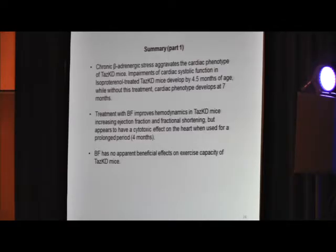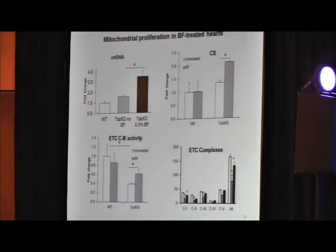So far, what we found: chronic beta-adrenergic stress aggravates cardiac phenotype in tafazine knockout mice. Impairments in cardiac systolic function in iso-treated tafazine knockout mice developed much earlier, at 4.5 months of age, while without this treatment, cardiac phenotype, dilated cardiomyopathy or systolic dysfunction, becomes apparent at seven months of age. Bezafibrate improves hemodynamics of tafazine knockout mice, increasing ejection fraction and fractional shortening, but appears to have a cytotoxic effect on the heart when used for prolonged period of time, like four months. And it has no apparent effect on exercise capacity.